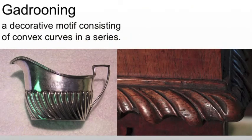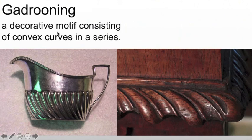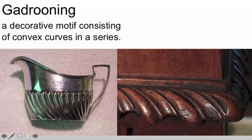Then we have gadrooning. This is a decorative motif which consists of convex curves in a series. It's a really broad definition because it's a really broad idea. On furniture we see these convex curves coming down, almost dripping down on the molding. But here we see the same thing going up on what would be a creamer or something along those lines. It can take on a number of different forms, but it's always going to have some kind of convex curve form — a series of forms rather than lines. You see a positive form of the large curved surface, and then a scoop in between which separates them. That's really going to be a hallmark of gadrooning.